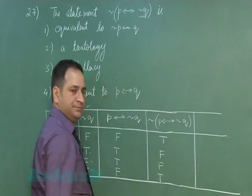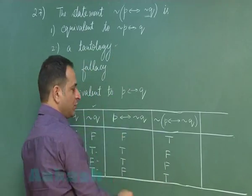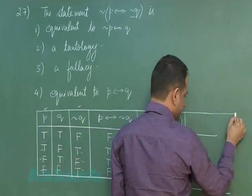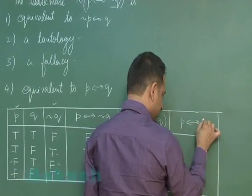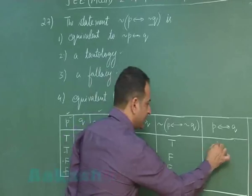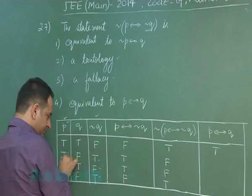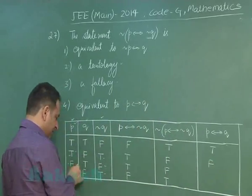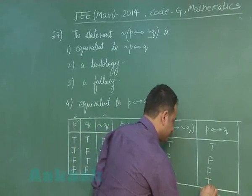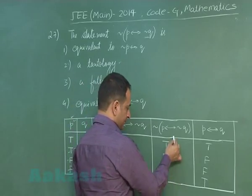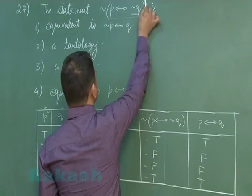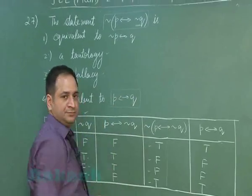It is very clear from here: all values are not true, so it is not a tautology; all are not false, so it is not a fallacy. Now we check the remaining options. For p ↔ q: if both are true we get true; if one is false we get false; if both are false we get true. You can see we are getting the same values from both tables. So this is equivalent to the fourth option — p ↔ q.